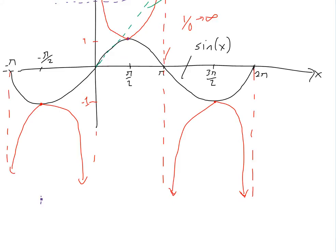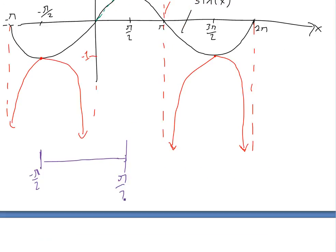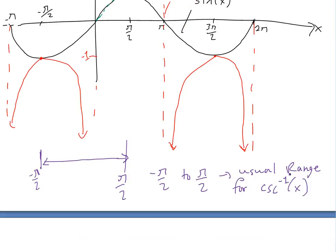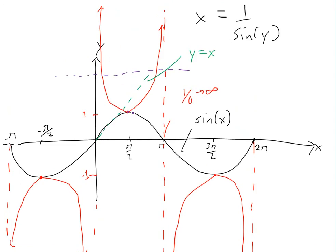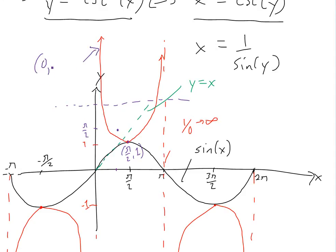The usual domain selected for cosecant — which becomes the range of the inverse — is from negative π/2 up to π/2. We switch domains and ranges when taking an inverse. So a point like (π/2, 1) on cosecant becomes (1, π/2) on the inverse, which is approximately (1, 1.57). And a point approaching (0, ∞) becomes (∞, 0) — so the inverse approaches 0 as x goes to infinity.